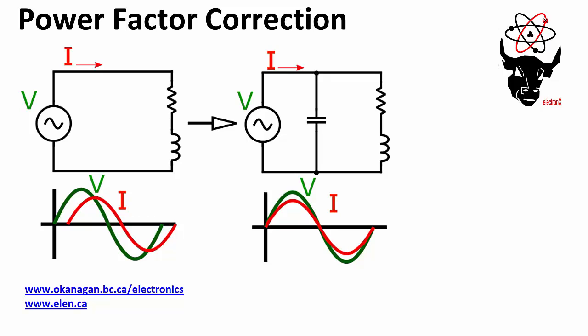Power factor, by definition, is the ratio of the real power delivered to the load divided by the apparent power in the system. And apparent power in the system is equal to Vrms times Irms. It turns out that the closer the voltage and current are in phase to each other, the closer to one your power factor is going to be.